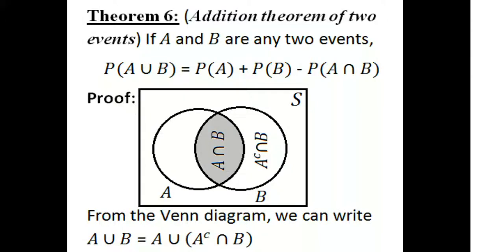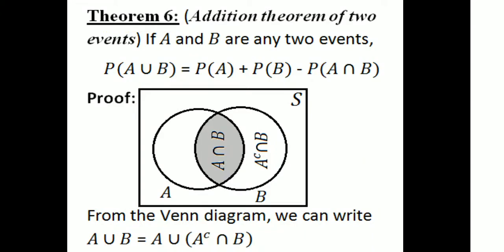In the previous classes, we already discussed some theorems related to probability. If we have 5 theorems, we will discuss the first five in a previous class. Theorem 6 is the next topic: the addition theorem of 2 events.